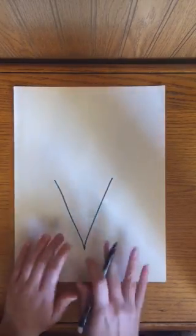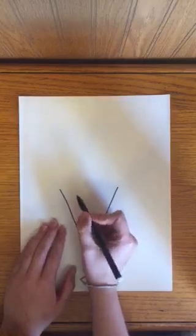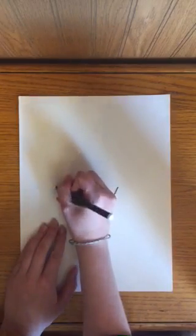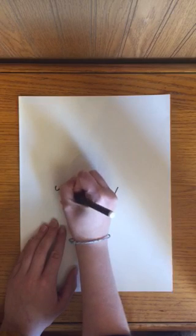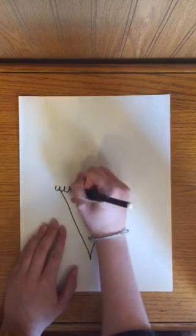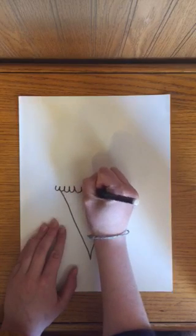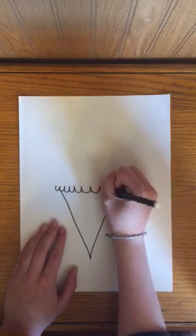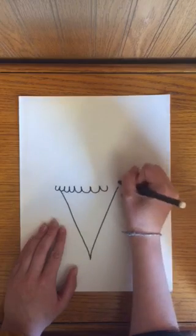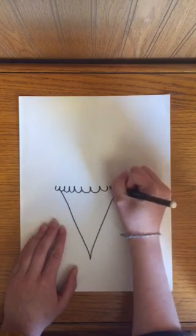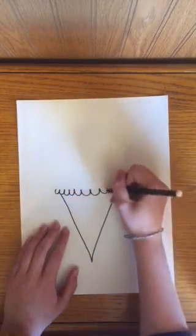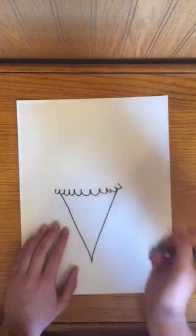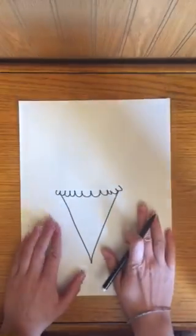Okay and now at the top of this V shape I am going to draw U shapes that are connected together or like W's connected together. This is going to be the bottom of my ice cream scoop and they can be different sizes and they can go different ways because whenever you scoop ice cream it doesn't always look perfect but it still tastes delicious.